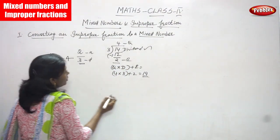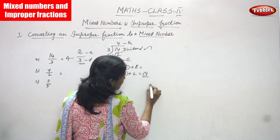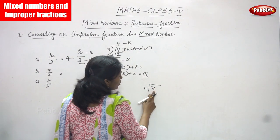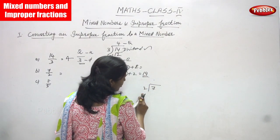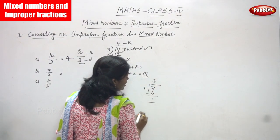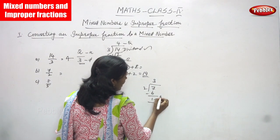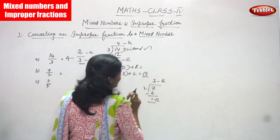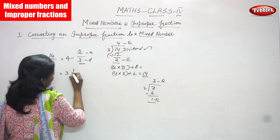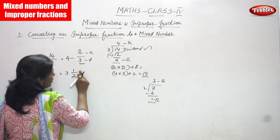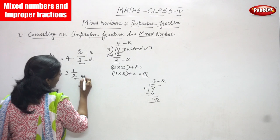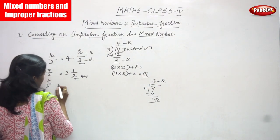Next sum is 7 by 2. You do the same process — divide 7 by 2. 7 is the dividend and 2 is the divisor. 3 twos are 6, so the remainder is 7 minus 6 equals 1. 1 is the remainder, 3 is the quotient, and 2 is the divisor. So the answer is 3 and 1/2 — 3 is the whole number, the remainder 1 is the numerator, and the divisor 2 is the denominator. The answer is 3 and a half, that means 3 and 1/2.